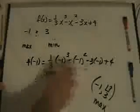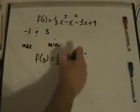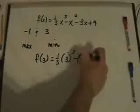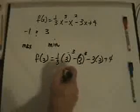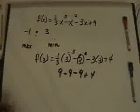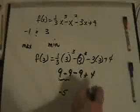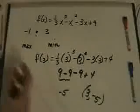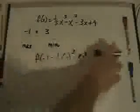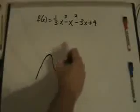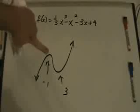f(3) = (1/3)(3)³ - 3² - 3(3) + 4 = 9 - 9 - 9 + 4 = -5. So the local minimum is (3, -5). Since this is an x³ function with a positive leading coefficient, its general shape is an S-curve, with the local max at x = -1 and the local min at x = 3.